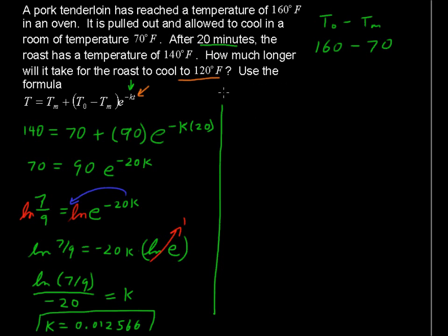So, 120 degrees is our large T. A lot of the other stuff is still the same. The surrounding temperature is 70 degrees. The initial difference in temperature was 90 degrees. That comes from right here. That's T sub 0 minus T sub M. Times E to the negative 0.012566 T.